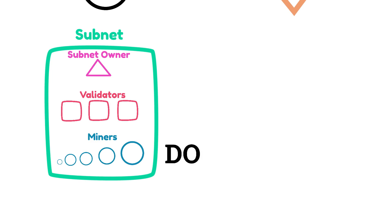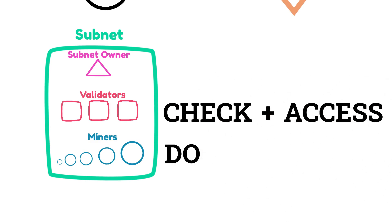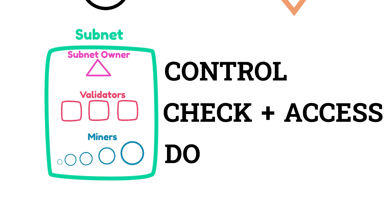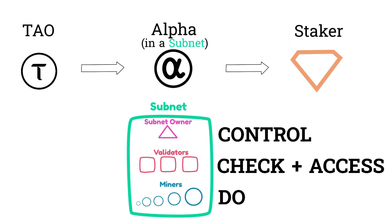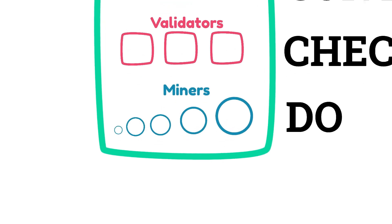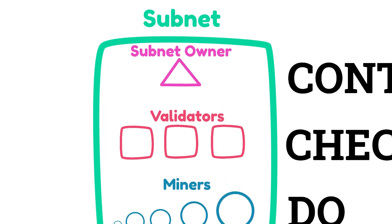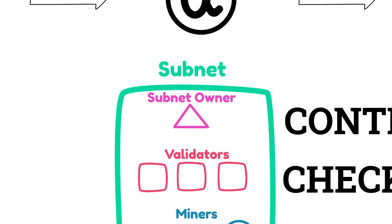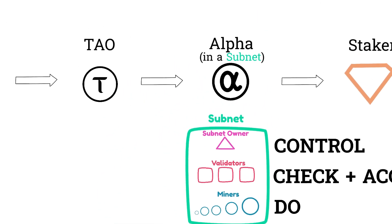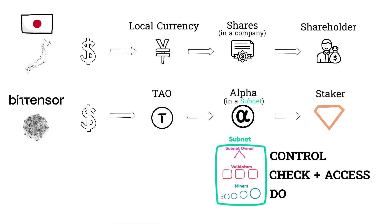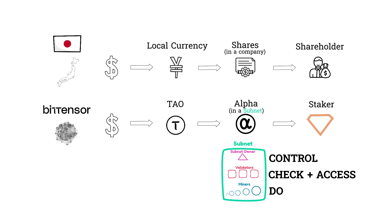Looking quickly at the participants within subnets: miners do the work, validators check and grant access to the work, subnet owners control the work, and you, as a staker or alpha holder, judge the value of the work. Participants are all in competition with one another for emissions. Miners compete against other miners, validators compete against other validators, and subnet owners compete against other subnet owners, competing to produce the most value for themselves, and by extension making BitTensor tau more valuable.